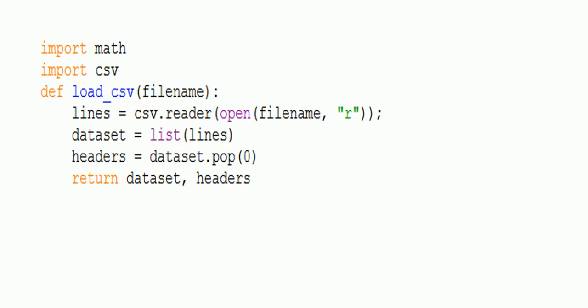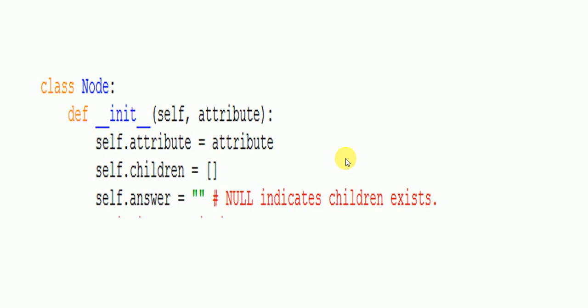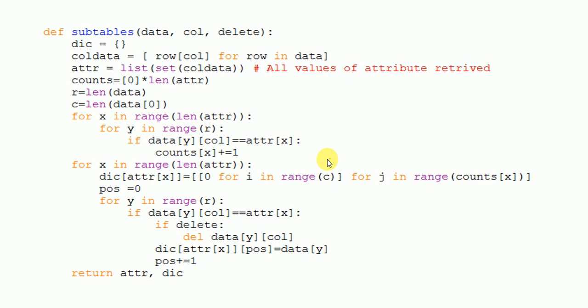In this class we will discuss the ID3 program, which is the decision tree entry program. These are the code segments used during solving the ID3 concept. The first part is the load CSV file function, which opens the file in read mode, reads the lines, puts them in the dataset, and pops the headers. The next part is the node class used during the ID3 program, and the subtables function which classifies the different types of each attribute.